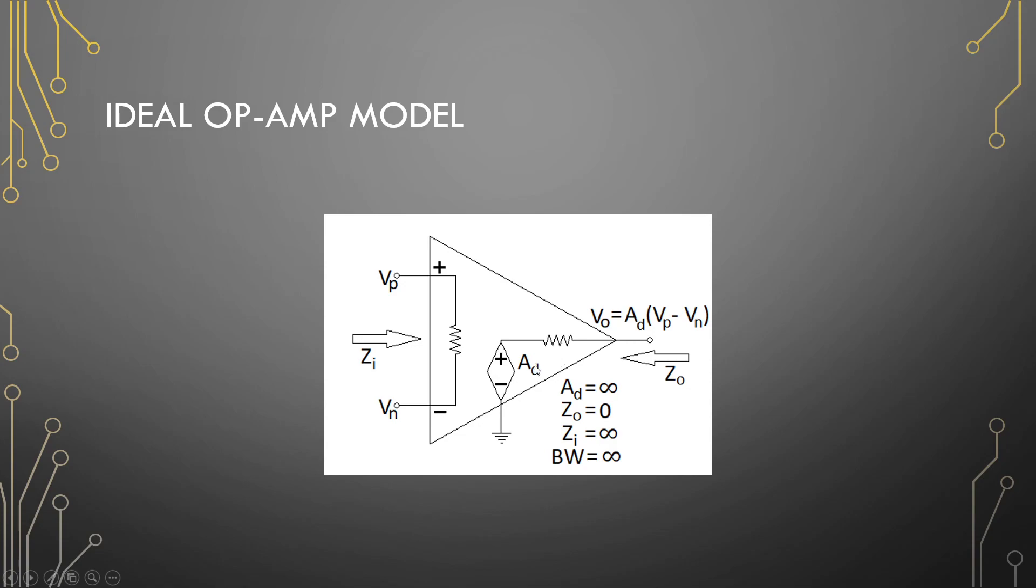This means that there is no losses when we are powering a device external to our amplifier. Our input impedance should be infinite, so there is no losses going into our device. We will have maximum power transfer in and out of our amplifier.